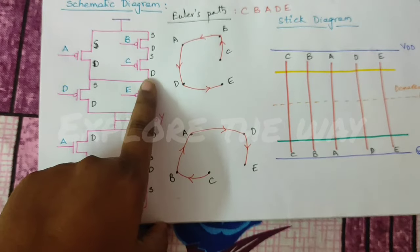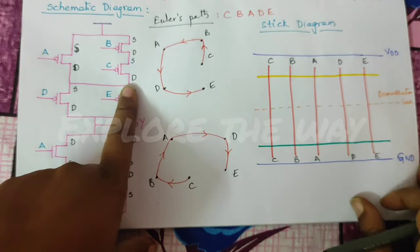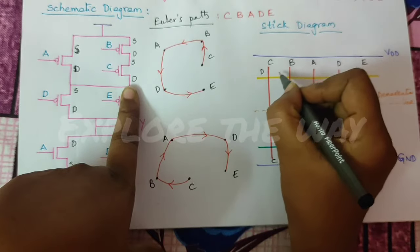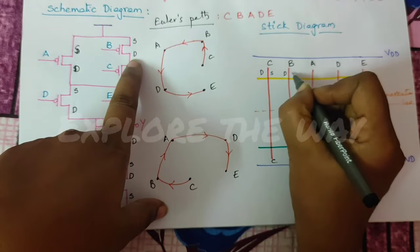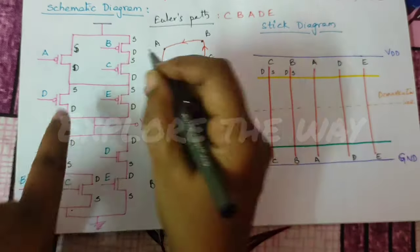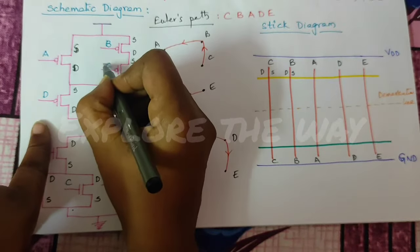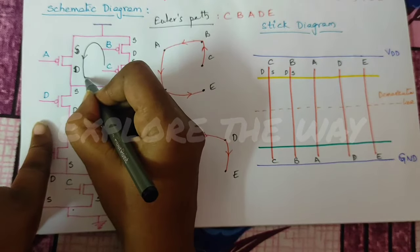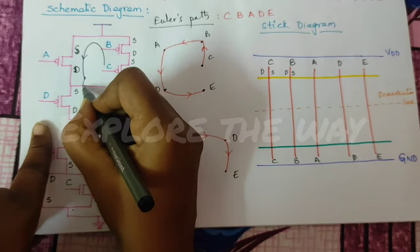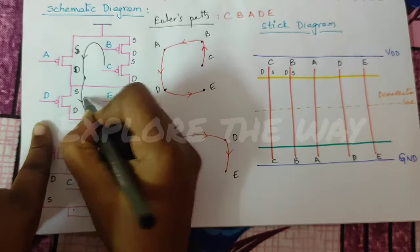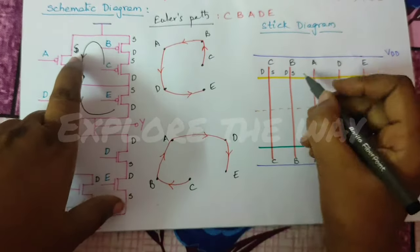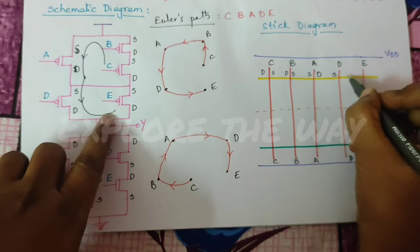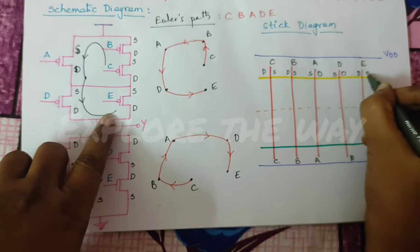So, start from C. Drain, source. Drain, source. Again, come in this direction. Again, source. Drain, source. Drain, source.